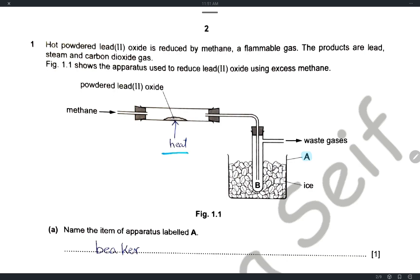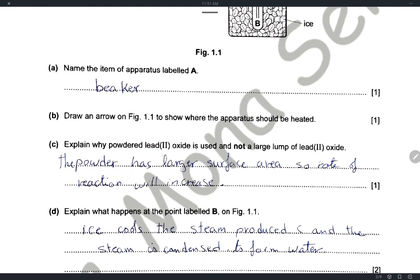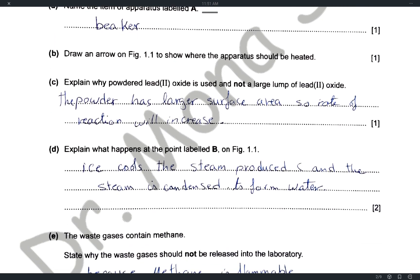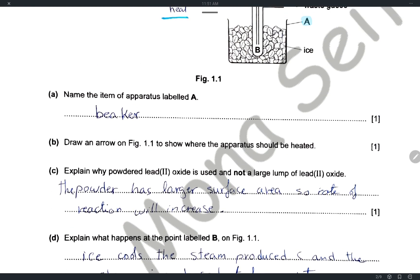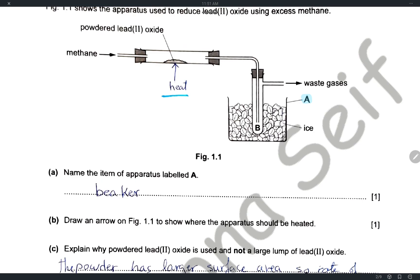Explain why powdered lead oxide is used and not a large lump. The powder has a larger surface area, so the rate of reaction will be higher. We use powder to increase the rate of reaction. Explain what happens at point B: the steam produced is passed through the tube where it is cooled by the ice.